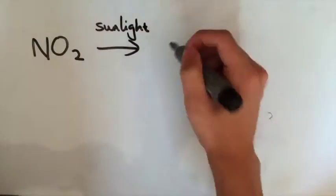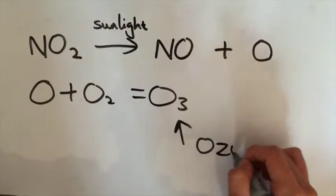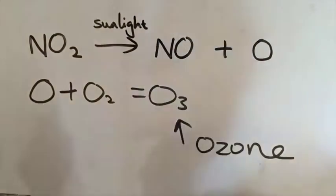To briefly explain this process, nitrogen dioxide will react with sunlight after being released from factories or power plants. They form nitrogen monoxide and ozone.